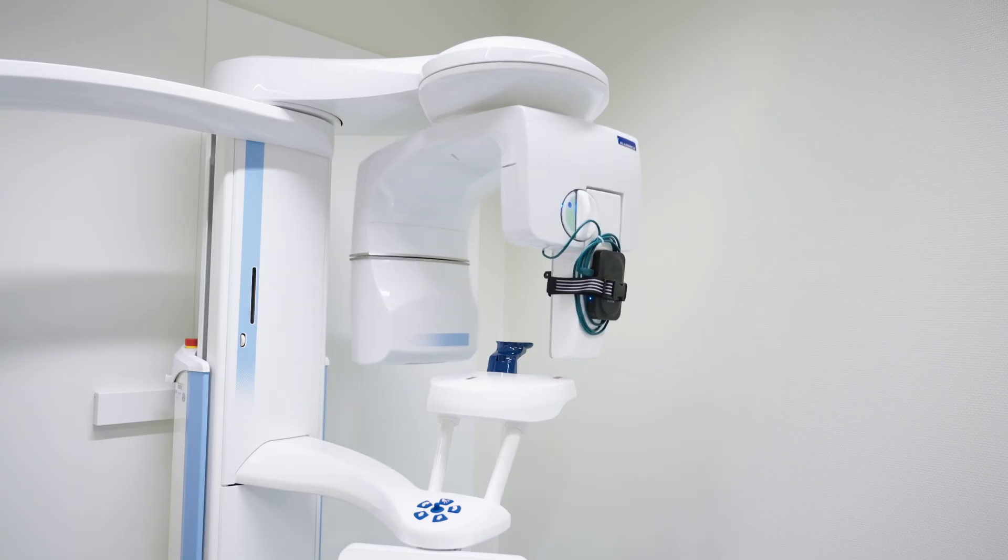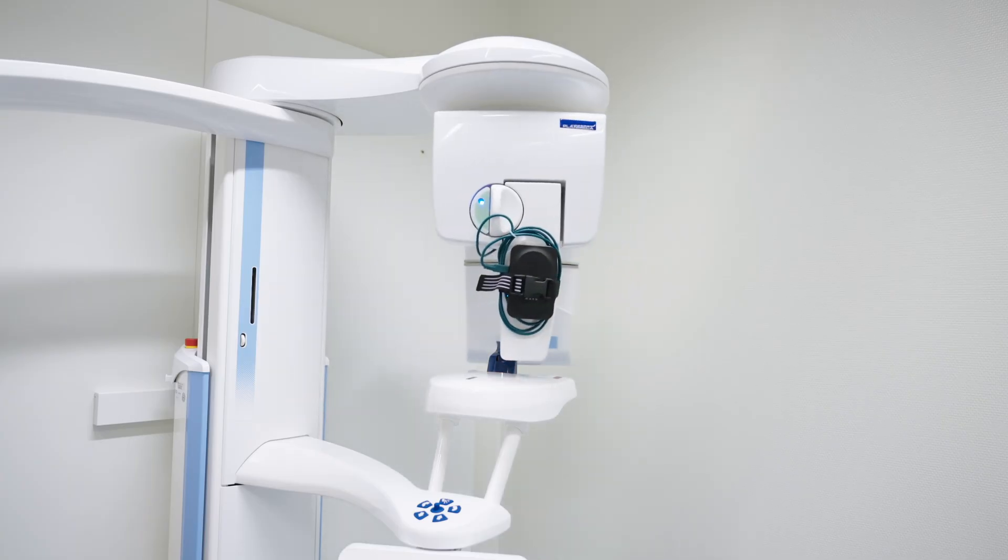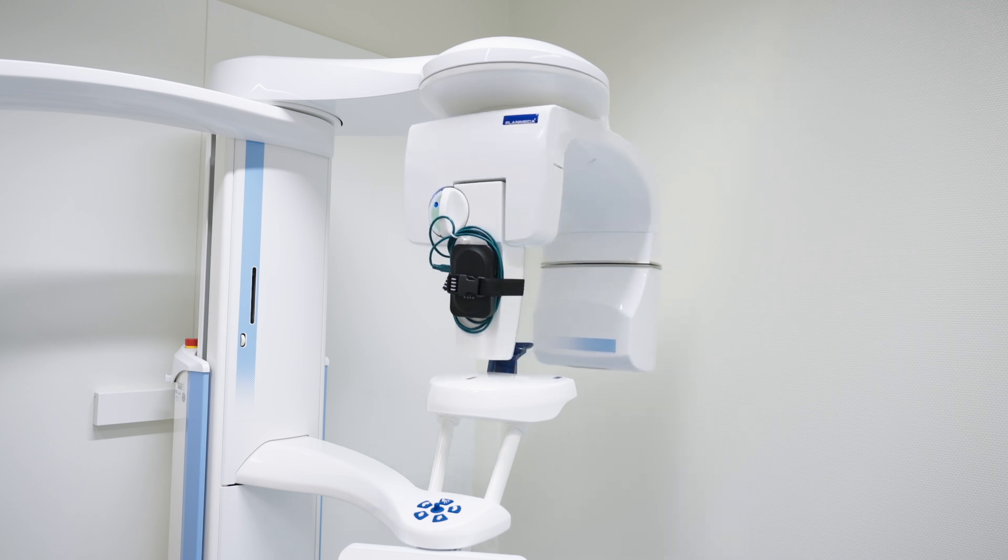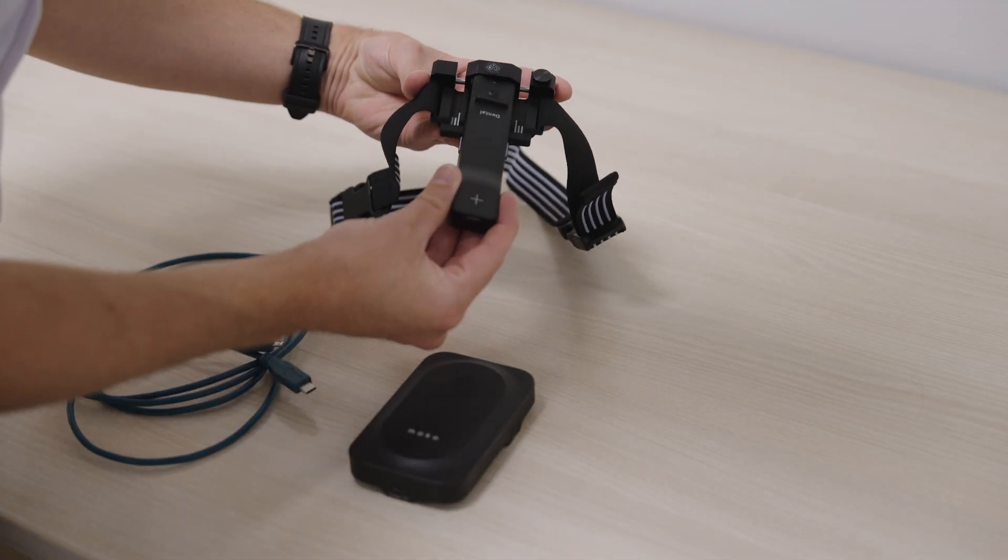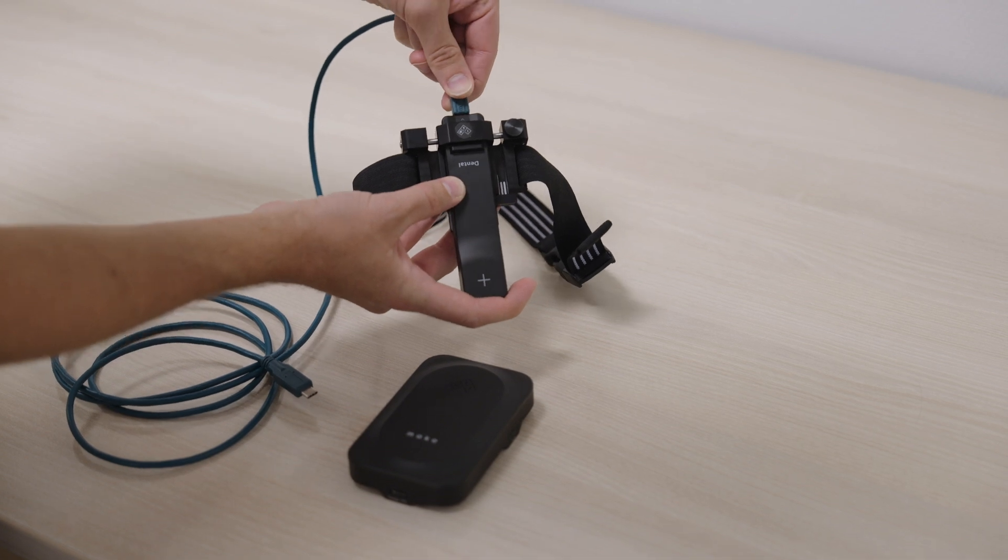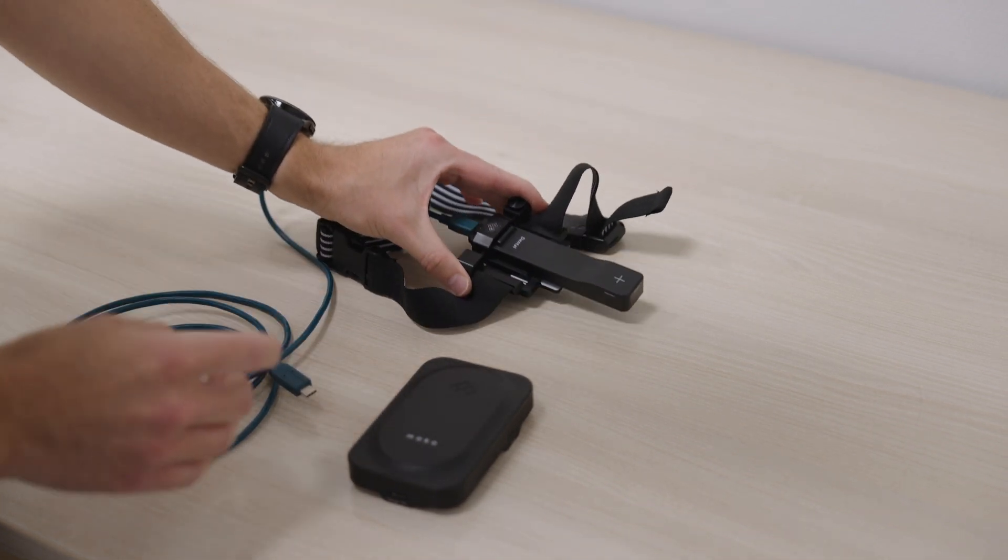To measure on panoramic dental x-ray systems Mako is used together with the panoramic dental holder. Place the dental probe into the holder. Connect the Mako dental probe to the base unit via USB cable.